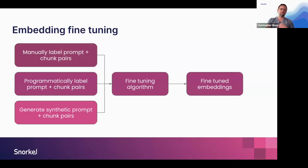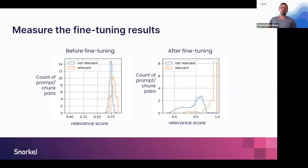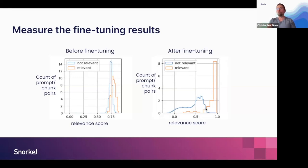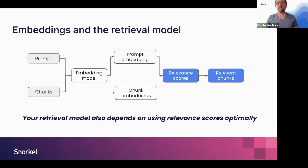I won't get into the mechanics of the fine-tuning algorithm today for time's sake, but there are APIs that allow this to operate elegantly off the shelf. What do you get once you fine-tune the embedding space? On the left-hand side, the pre-trained embedding space lumped together relevant and irrelevant chunks with no good threshold. On the right-hand side, after fine-tuning, the two distributions are very clearly separated — relevant chunks have high scores, irrelevant chunks have low scores. We would set a threshold of about 0.7: any relevance score over 0.7 counts as a relevant chunk included in the context window.